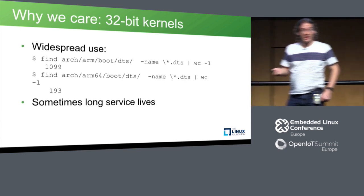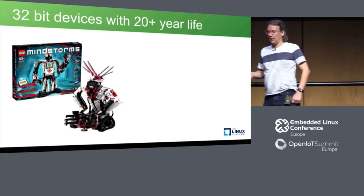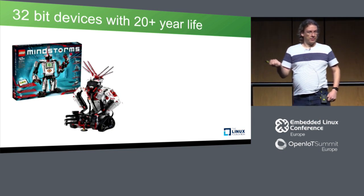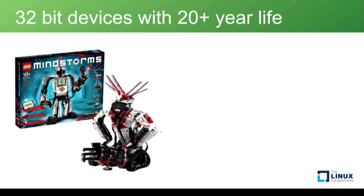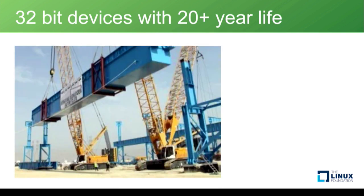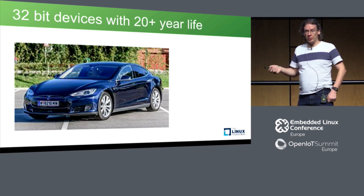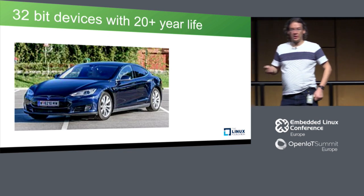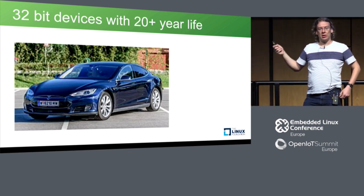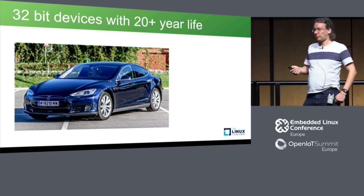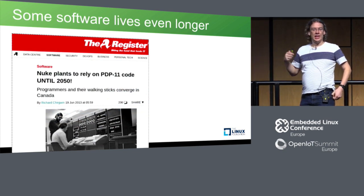Some of these things have awfully long service lives and run awfully old kernels. Some examples we support in the upstream kernel: we have toys — my kids are playing with Legos from the 70s — deployed with a kernel from 2010. We have heavy industry stuff with tiny embedded controllers, sometimes with an ARM9 or even older. In the automotive industry a lot of products are still deployed with 32-bit, and these will all fail unless we do something about them.